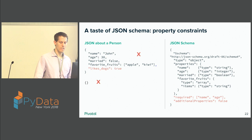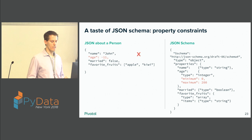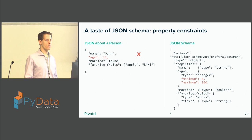Depending on what you're doing, you can say required properties or that additional properties are not allowed, and that name and age for example are required. That way you can start constraining things. You can even go further and say age has to be an integer, but it also needs to be between 0 and 200, so they don't give you negative numbers or a million — I'm being generous with 200 because medicine is advancing at a rapid pace.